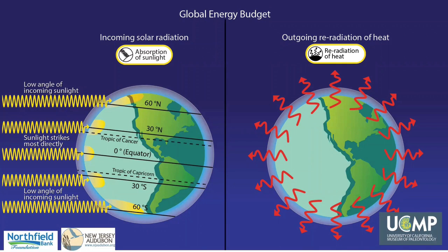The Sun provides the Earth with most of its energy. Today, about 71% of the sunlight that reaches the Earth is absorbed and the rest is reflected back into space. Absorbed sunlight is then re-radiated by the Earth as long-wave infrared radiation, also known as heat, represented as red arrows here. Sunlight and re-radiated heat are the energy sources that drive processes in the atmosphere, hydrosphere, and biosphere. However, because the Earth is a sphere, more sunlight is absorbed per square area in the tropics than at the poles, so the Earth is heated unevenly. This is why it's warmer near the equator than at the poles.